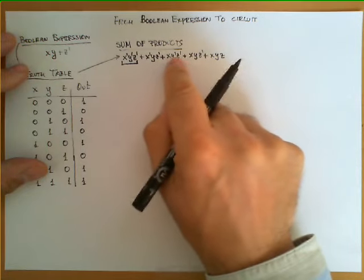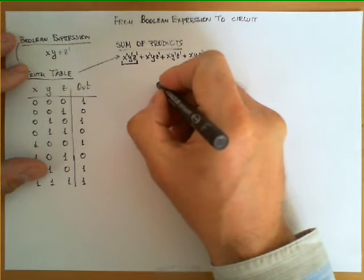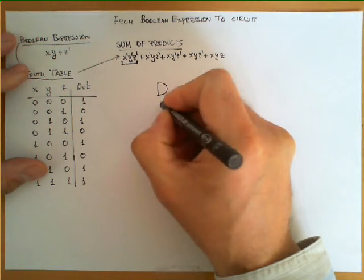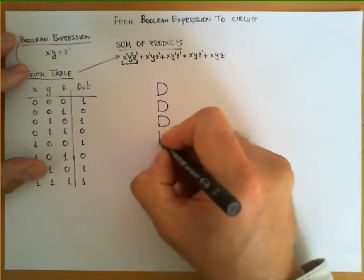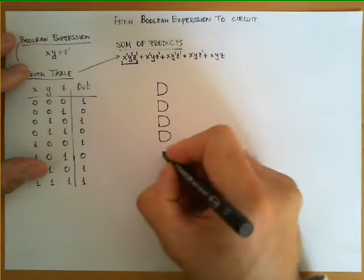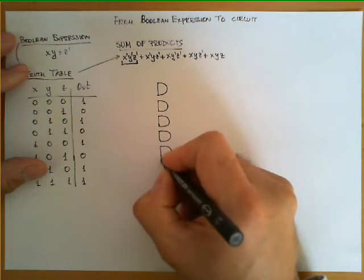So we have one, two, three, four, five of these products so we are going to create one, two, three, four, and five input gates.